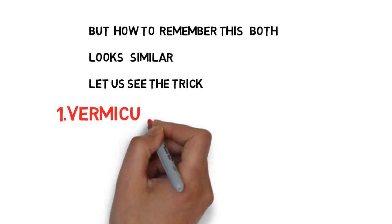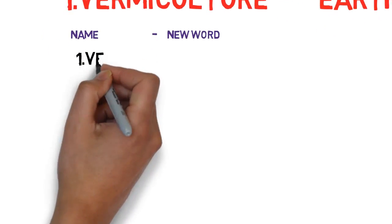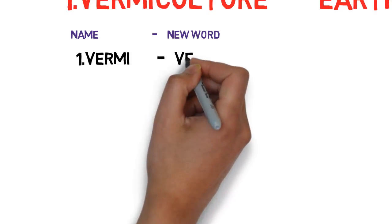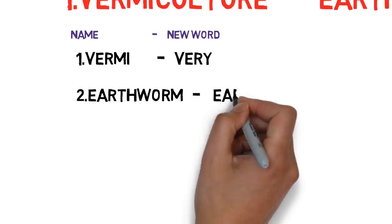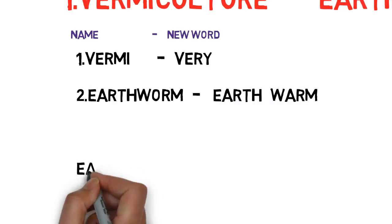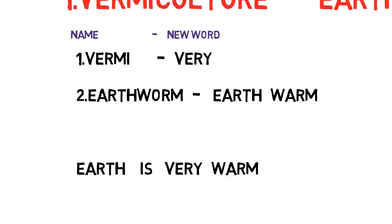Vermiculture is related to earthworm. Look at the word: V-E-R-M-I — 'vermi'. I replaced it with 'very': vermi sounds like very. Both start with V-E. If you remember 'very', you can easily remember 'vermi'. Try to repeat this word two or three times so that you can remember it easily.